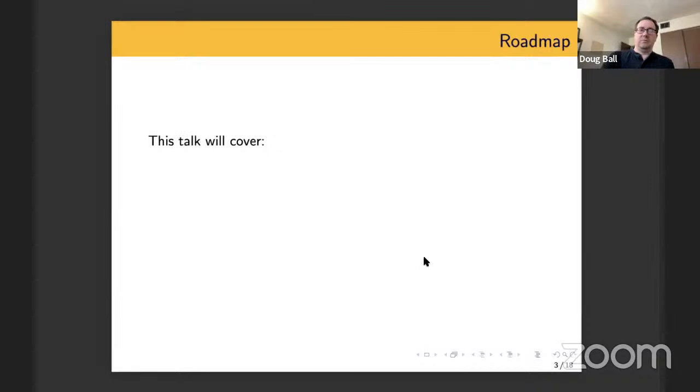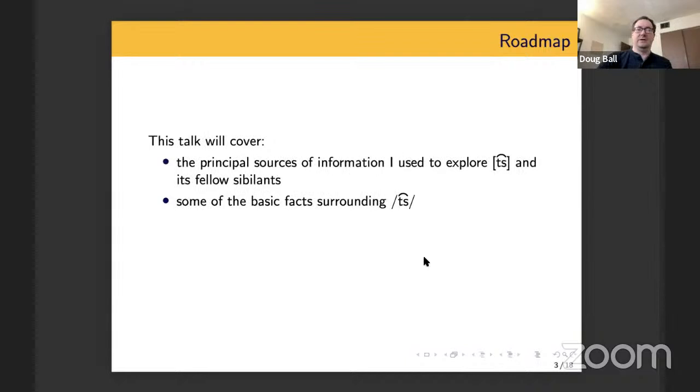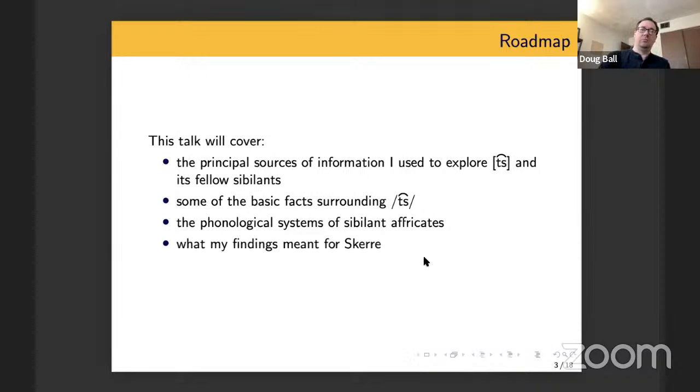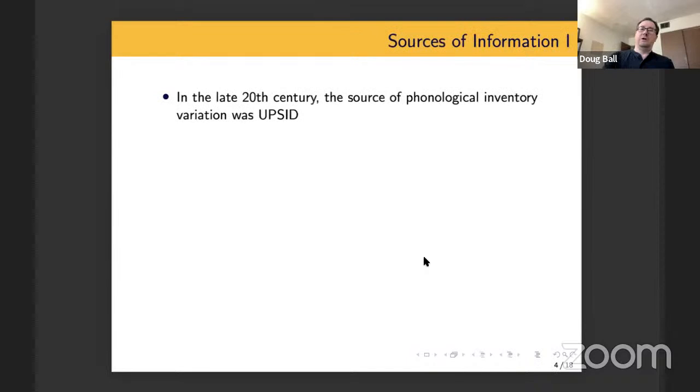So in this talk, we'll first talk about some sources of information that I use for TS explorations. And some of these, I think, are excellent resources to use if you're a conlanger and interested in particular segments. We'll talk about some very basic facts surrounding the phoneme TS. And then I'll talk a little bit about the apparent different kinds of phonological systems you get with sibilant affricates, which include TS. And then I'll wrap it up by talking a little bit about what my explorations led me to decide about Scare.